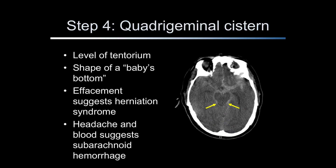The quadrigeminal cistern is adjacent to the circle of Willis. Blood found in the quadrigeminal cistern, in a patient with sudden onset of headache, suggests rupture of a saccular aneurysm of the circle of Willis. In this patient with rupture of a saccular aneurysm, blood is also seen in the sylvian fissures, shown by the blue arrows, and in the basilar cistern, shown by the yellow arrow. To locate the quadrigeminal cistern, we first identify the dorsal aspect of the sella turcica, also called the dorsum sellae. The quadrigeminal cistern is typically located within two cuts superior to the dorsum sellae.